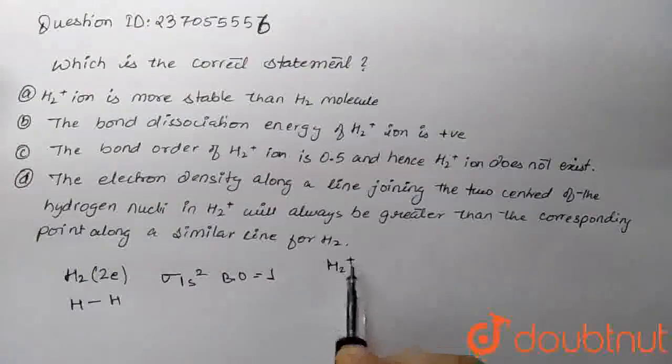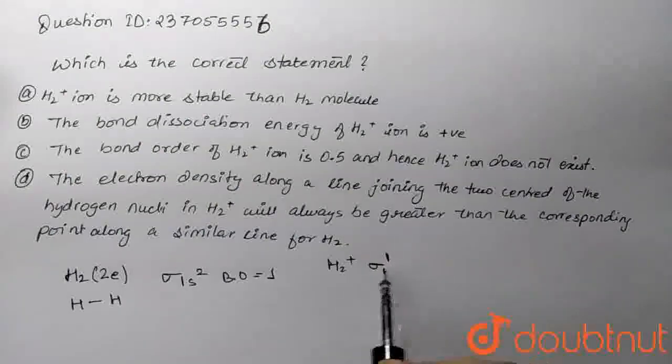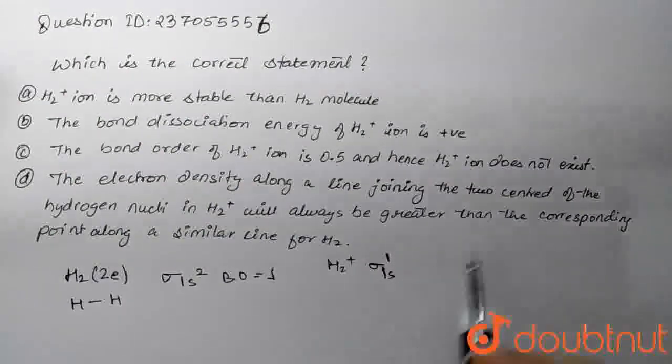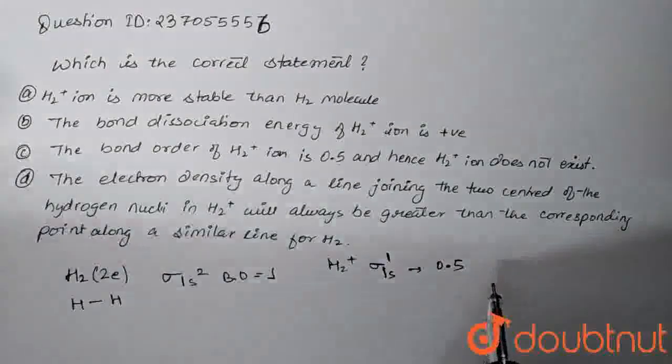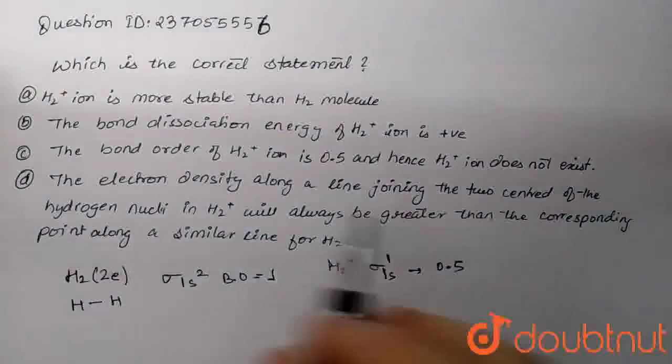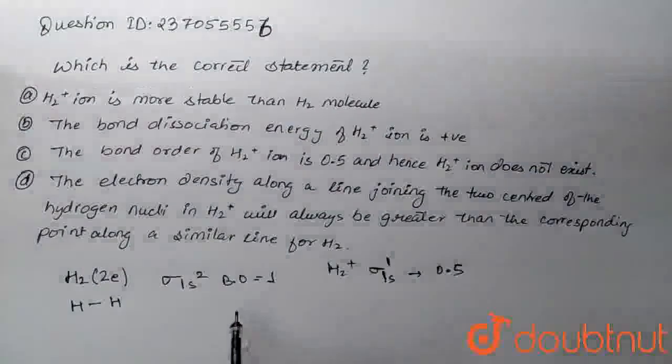But if we talk about H2 plus, this has a bond order of 0.5. So, according to the statement about H2, H2 is more stable based on bond order. The stability is directly proportional to bond order.